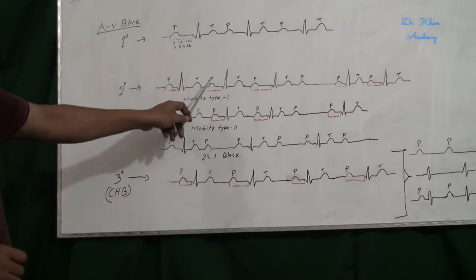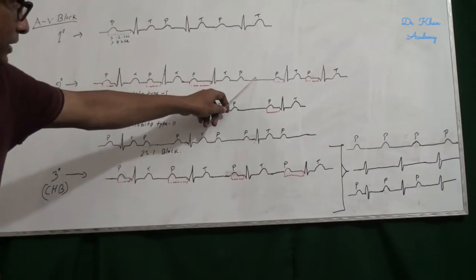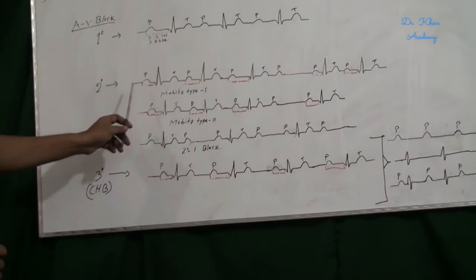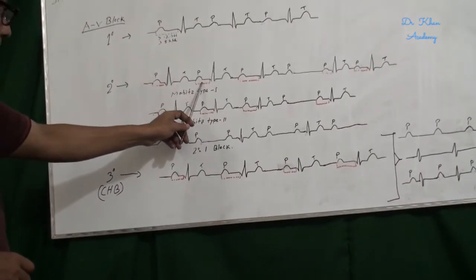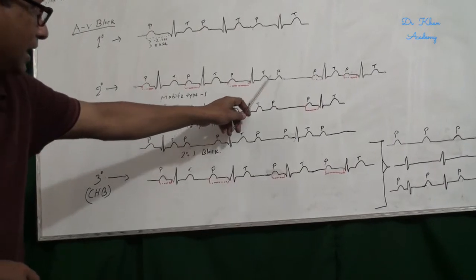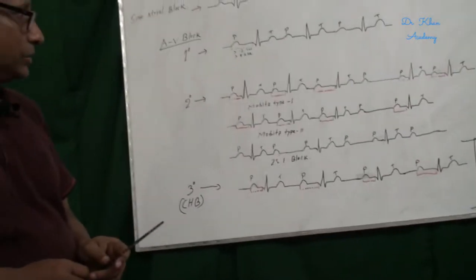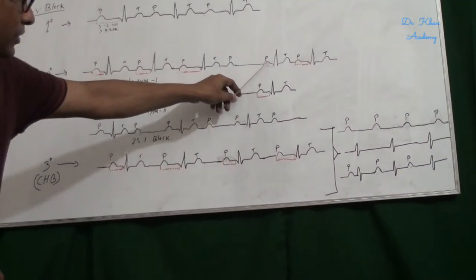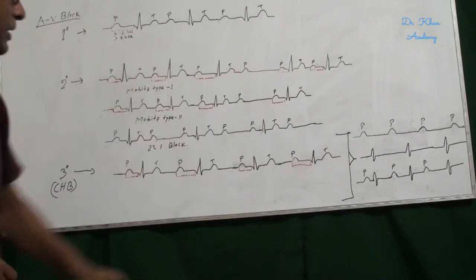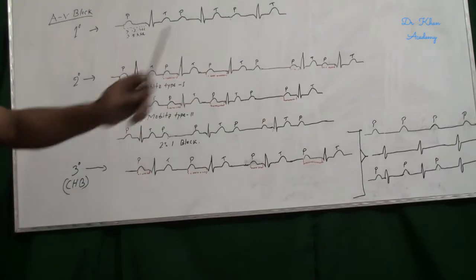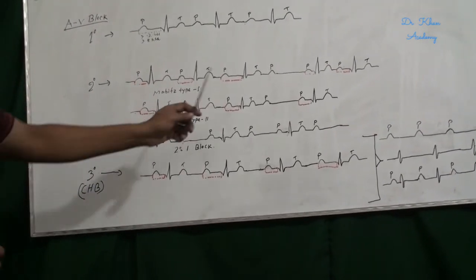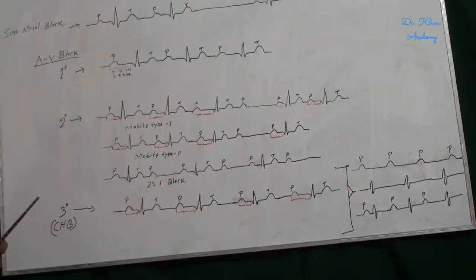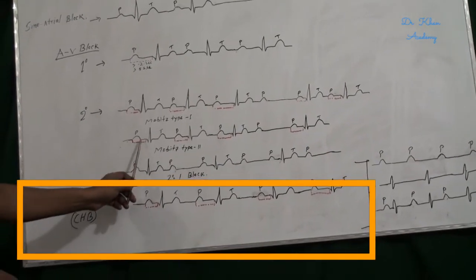In second degree AV block, some P waves are not conducted to the ventricle — some P waves are not followed by a QRS complex. In Mobitz Type 1, the PR interval gradually increases until a P wave is not conducted to the ventricle, then the cycle repeats itself: P is followed by QRS, P is followed by QRS, then a P wave is not conducted.